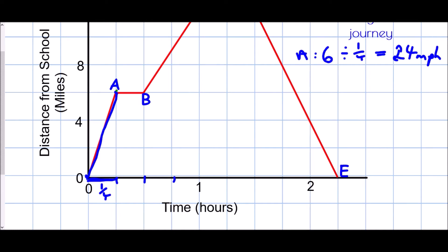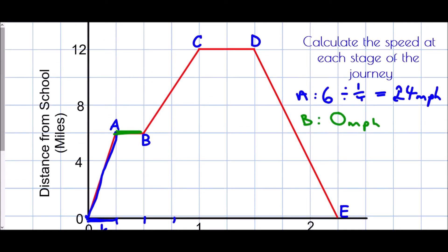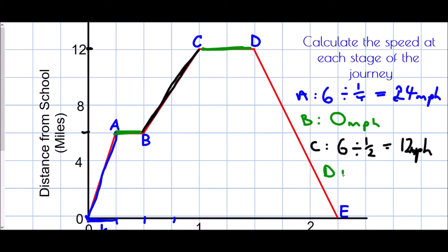From B to C, we already said this is slower than the first section. They were at six miles and travelled to 12 miles — so six miles again. But this time it was in half an hour. So that's six divided by a half, and dividing by a half means multiplying by two — so 12 miles per hour. We did half the speed. At D, again it is a flat line, so D is another zero miles per hour.